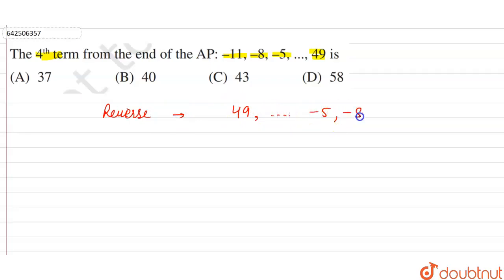According to this AP, now our first term will be equal to 49, and the common difference will be equal to -8 minus -5.